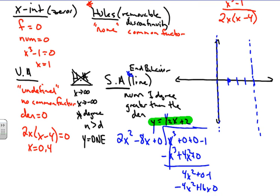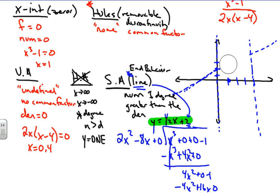The slanted asymptote equation is y = (1/2)x + 2, and I'll graph that line now. I plot the y-intercept at 2, then use a rise of 1 and run of 2 to draw the line. That gives us our slanted asymptote. Remember, slanted asymptotes, like horizontal asymptotes, only matter at the ends of the graph.